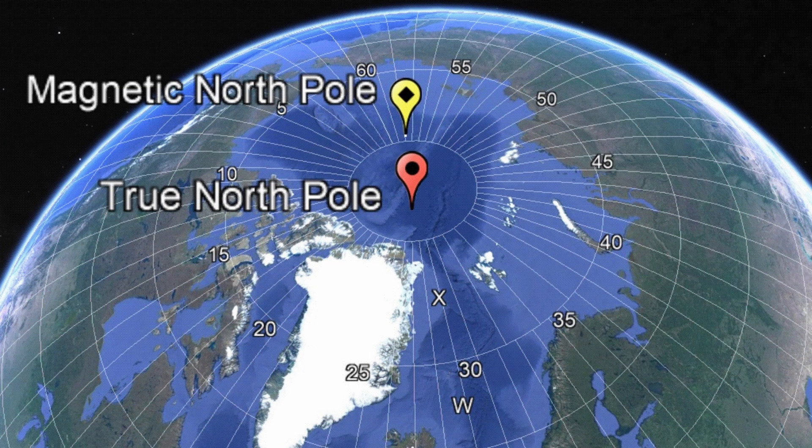There's also grid north, which is the direction northwards along the vertical lines on your map. This is different from true north, as the straight vertical lines on your map are printed onto a flat piece of paper, and those same lines on the ground actually represent lines which curve around a sphere. I may do a video one day about the Mercator projection, but today I haven't got time to go into that.